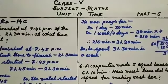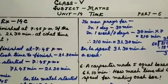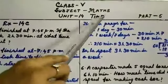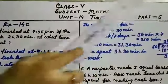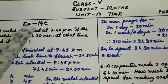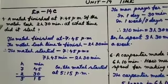Om Namah Shivaya students. So today you will do the next part of unit 14, Time part 6 of your junior math book 5, Exercise 14c, lesson number 4.